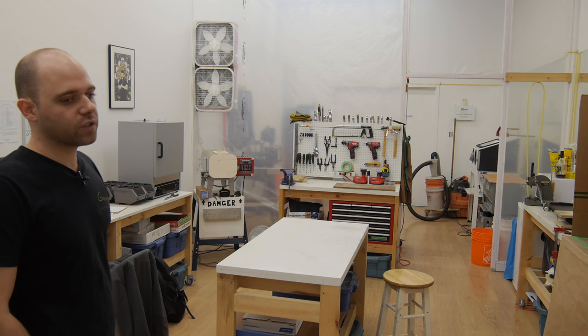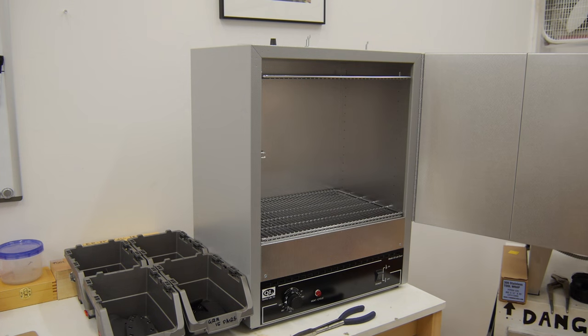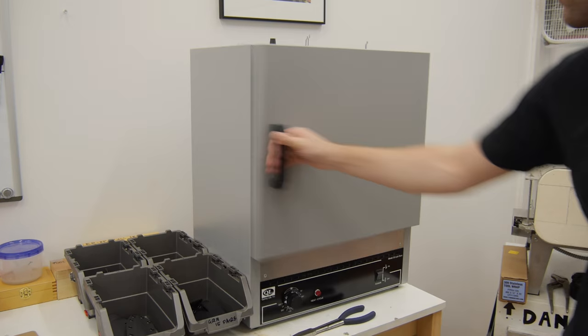I am starting to look at maybe having someone outside of the shop do my heat treatment, just because the little kiln is great but it has a lot of limitations about how many knives you can do at once and how consistently. Next to the kiln you can see the laboratory oven that I use to do the baking of my Cerakote.